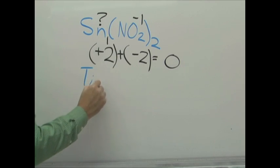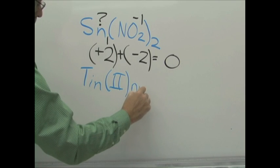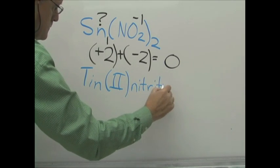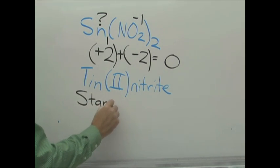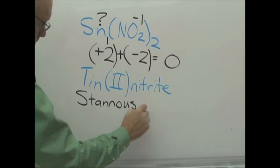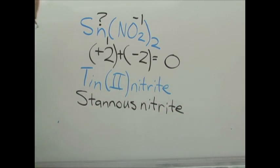What would the names be? The tin has a plus 2 charge, so using the stock system, it would be tin 2 nitrite. Again, nitrite is a given. You always know that it's going to be negative 1. The tin is the question mark here. Let's take a look at what the old system name would be. Now here's a disadvantage. Do you know what the charges are for the variable ion tin? Maybe not. In this case, it's the lower charge, so it's stannous nitrite.